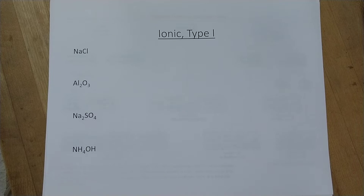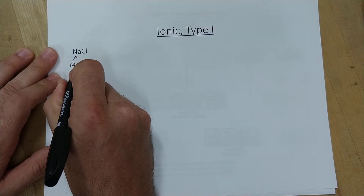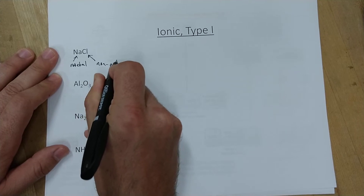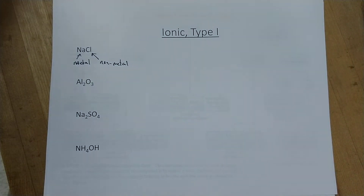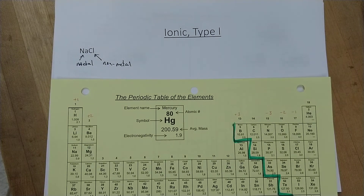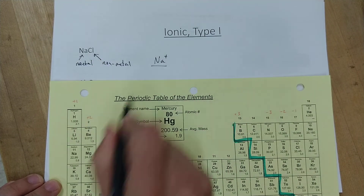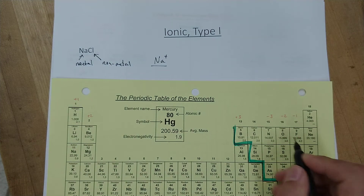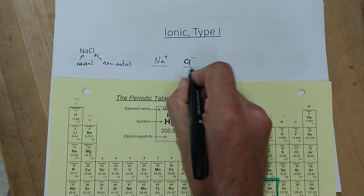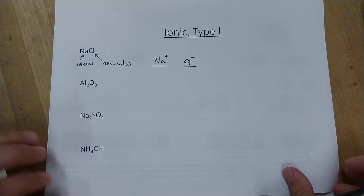The first example is NaCl. We've already identified it as ionic because sodium is a metal and chlorine is a non-metal. Looking at the periodic table, sodium is in the +1 column, so we have a sodium +1 ion, and chlorine is in the -1 column, giving us Cl⁻. The positive sodium ion and negative chlorine ion stick together to make this compound.